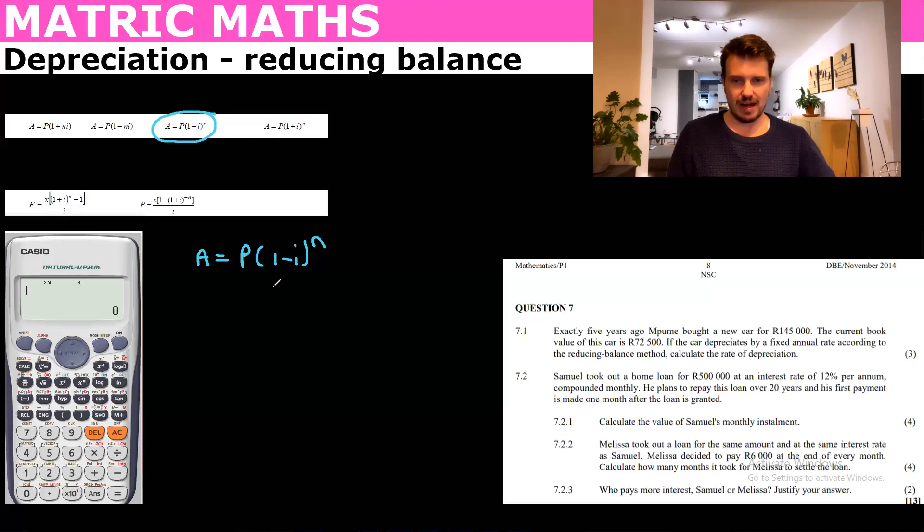They tell us that it's five years, so we know that n is equal to five. A is the amount that it depreciated to, so that would be $72,500.